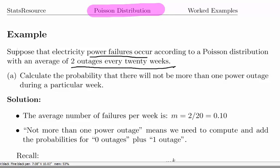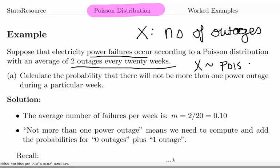In this case, X is the number of outages. You can specify the number of weeks. X is a Poisson random variable.